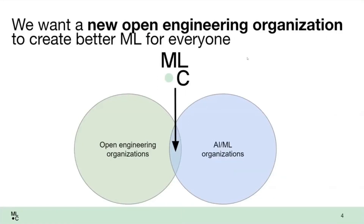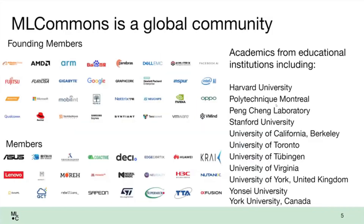For many of us here who are members of IEEE, that is a great example of an organization focused on collaborative engineering — we build standards. ML Commons is one of those open engineering organizations. When we started ML Commons, we saw that all of the AI and ML organizations were really not focused on engineering, so we are at the intersection of those two things. We want to build tangible engineering artifacts and be an open global community. We have members on six out of seven continents.